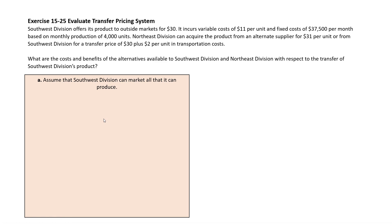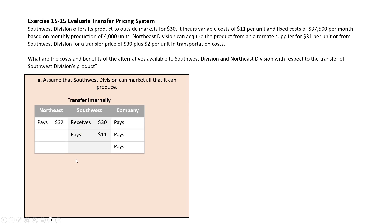Ultimately, if Southwest is doing a transfer with Northeast Division, it's losing out on an external sale. Let's assume we do decide to transfer internally from Southwest to Northeast. Northeast is going to pay $32 total — $30 to Southwest plus $2 in transportation. Southwest is only receiving $30 because the $2 goes to the independent carrier. But what are they incrementally paying themselves to produce that unit? $11 in variable costs.